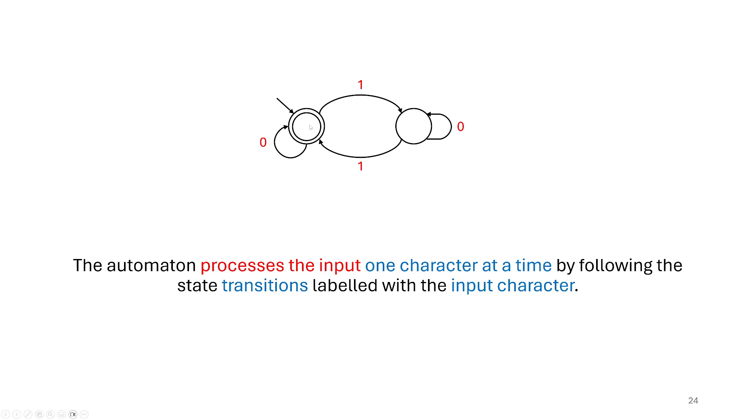So for instance, if we start in the start state, we have one transition that tells us where to go if we got a zero. And we have another transition which tells us where to go if we got a one.